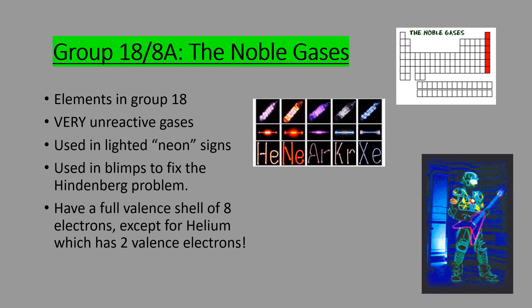After that, we have group 18 or 8A — the noble gases. These are very unreactive; they have a full outer shell and are very stable. They're used in neon signs and in blimps, as we talked about to fix the Hindenburg problem. They have a full valence shell of eight electrons, except for helium — this is going to be super important later on. Helium only has two valence electrons, but its outer shell is full because it's in the first energy level, which only holds two electrons. All of the other noble gases will have eight in their outer shell.